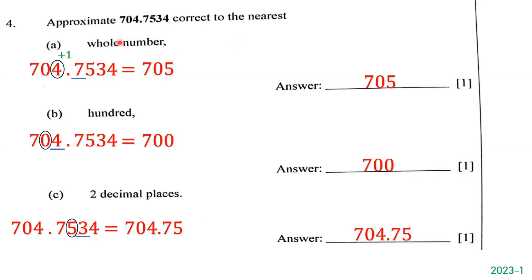The question says: approximate 704.7534 correct to the nearest whole number. Since they're asking us to approximate to the nearest whole number, we circle 4 because 4 is in the ones place. We look at the number to the right of 4, which is 7. Since 7 is greater than 5, we round up and add one to 4, giving us 5. The answer is 705 — we keep 7 and 0, change 4 to 5, and drop all the decimal parts.